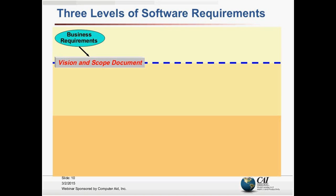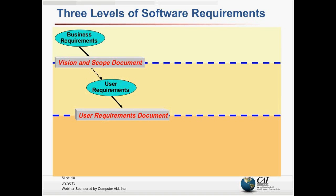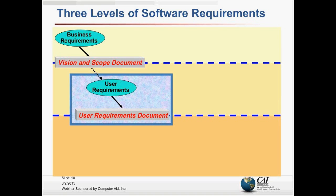You can't build software from such high-level information, so we need to go down to a different category: user requirements. In this diagram, the solid arrow means 'is stored in' and the dashed arrow means 'is the source of' or 'leads to.' Once we understand our business objectives, we can start thinking about what users are going to do with the product. That's what I call user requirements, and one way to collect those is in the form of use cases — that's the level of information we're focusing on today. This isn't just a lower-level decomposition of business requirements; it's actually a different kind of information.